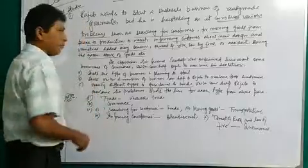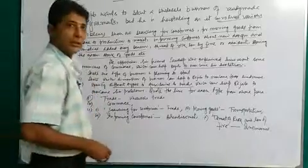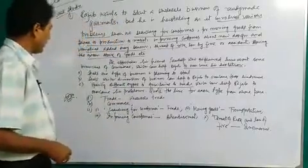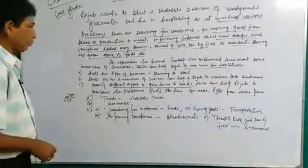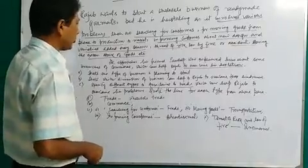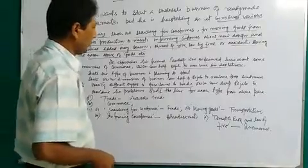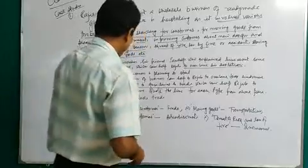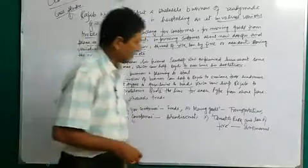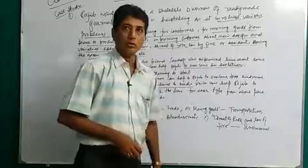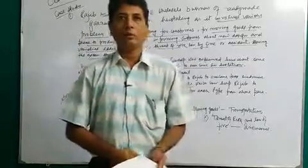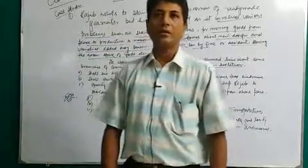So to summarize: the type of business is wholesale trade; the dimension is commerce; and the auxiliaries are — one) searching for customers relates to trade, two) moving goods relates to transportation, three) informing customers relates to advertisement, four) threat of risk and fire relates to insurance. Thank you, today's class is now ended.